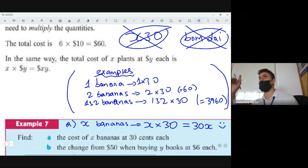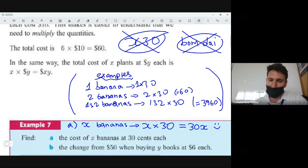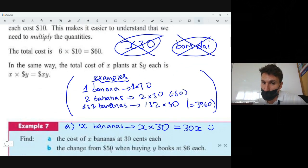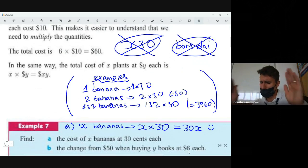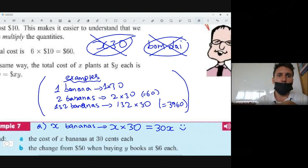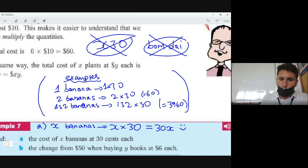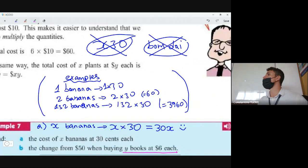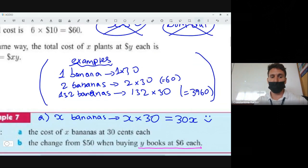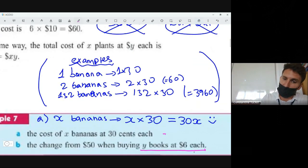All right, moving on to, what about the last question guys? I promise, I know some of you are a bit uneasy though, they're banging on the desk. Hang in there, almost done. The change from 50 dollars when buying y books at six dollars each. Bear with me, let's break this down into two sections. Now how much does it cost to buy y books at six dollars each? What? Y books, y books?